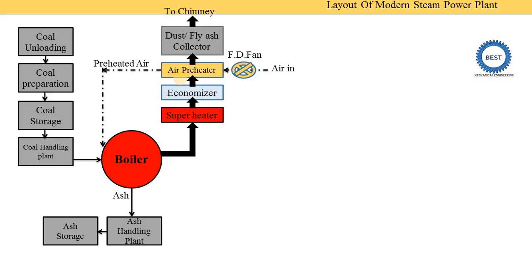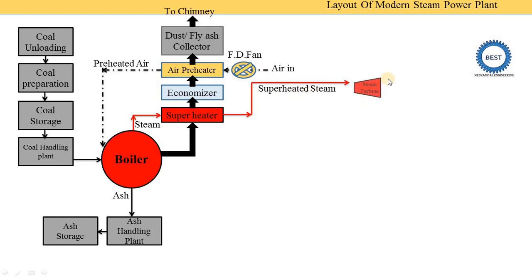Now the third circuit is the water and steam circuit. Similar to how we drink water and remove it from the body, the steam power plant circulates water and steam. We start from the steam side for easier understanding. In the boiler, water is supplied from the economizer. Saturated steam from the boiler is supplied to the superheater. In the superheater, the temperature of the steam is further increased above the saturation temperature. This superheated steam is then supplied to the turbine.